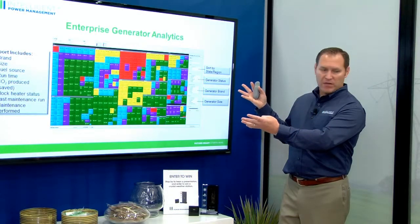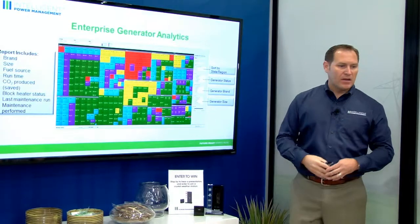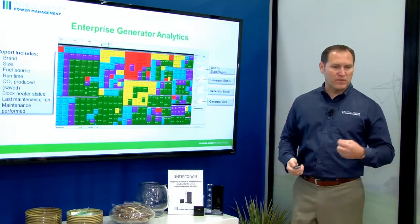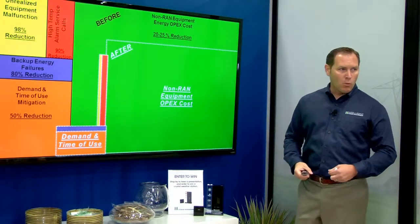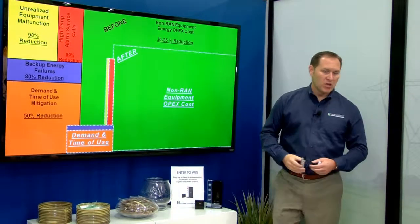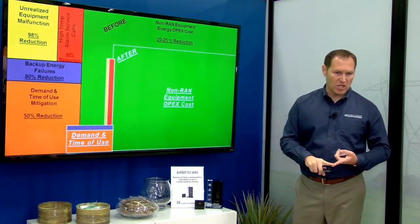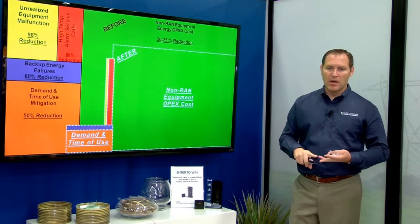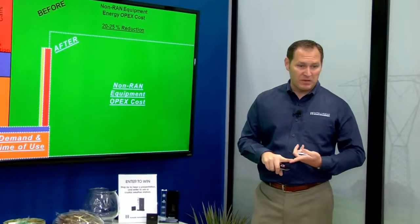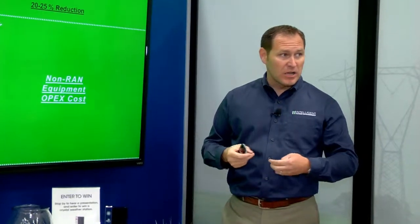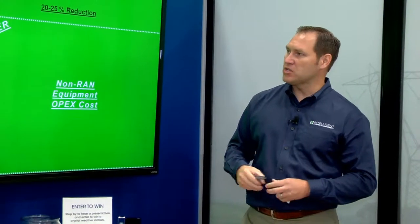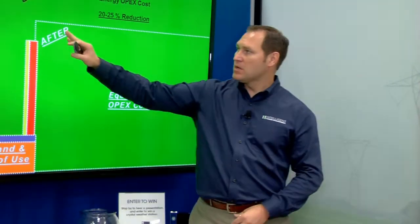This takes an enterprise view of data collected from each individual site, so we can let our customers know how efficiently or inefficiently their site is working. The key thing for us is to drive efficiencies. What we've learned so far: we've achieved a 98% reduction in unrealized equipment malfunction. We've found HVACs malfunctioning the customer didn't know about, dehydrators malfunctioning the customer didn't know about, public utility equipment on site pulling energy without the customer's knowledge, and legacy equipment 20 years old — all connections unplugged but the system still turned on consuming energy.